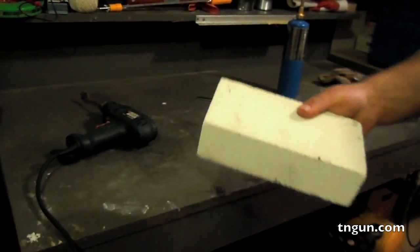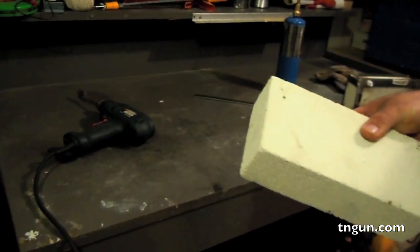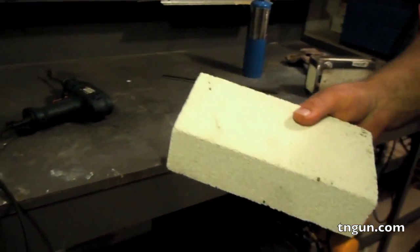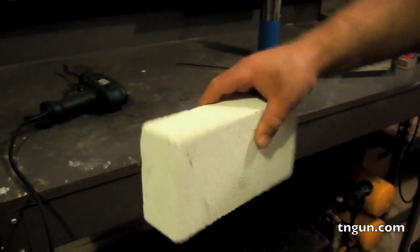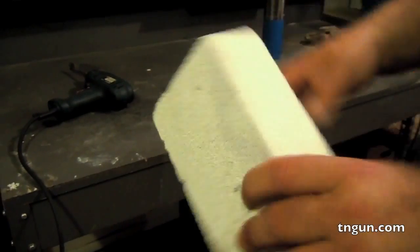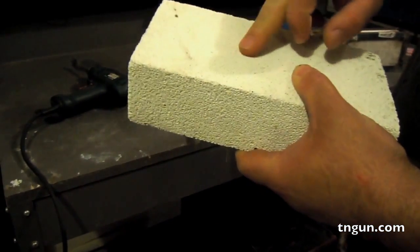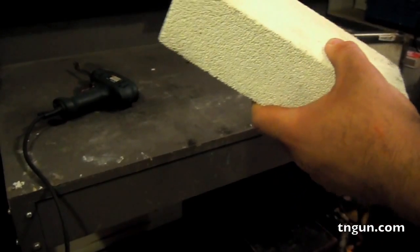Now what this is, this is a soft fire brick. I got it from a ceramic supply store. They're like $5 a piece, about 9 feet long, and about 4 feet wide, about 3 inches thick. It's very light, very porous, and you can scratch it with a nail.